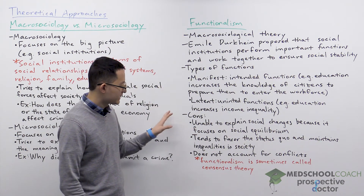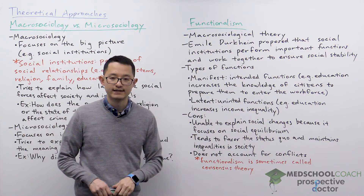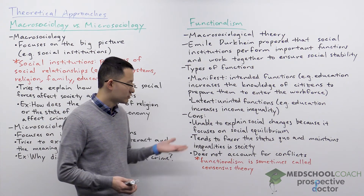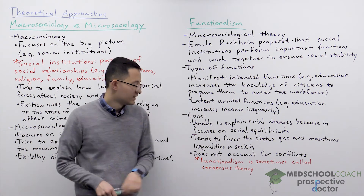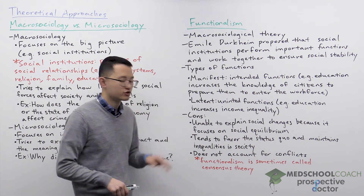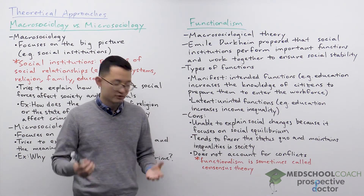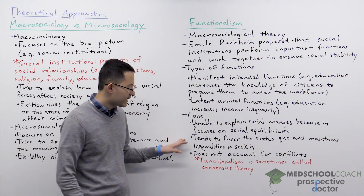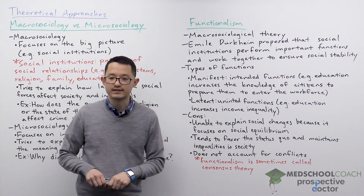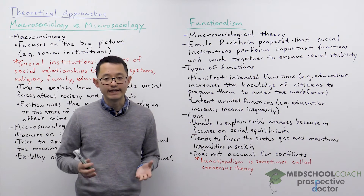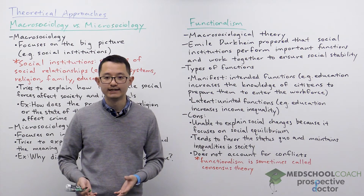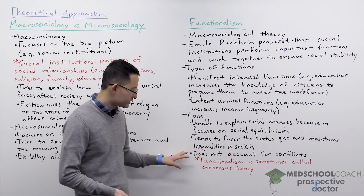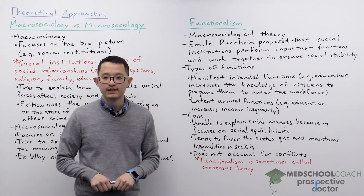Functionalism has a number of cons and critiques. The first is that it is unable to explain social changes because it focuses on social equilibrium. As a result, functionalism tends to favor the status quo and maintain inequalities in society. Finally, functionalism does not account for conflicts.